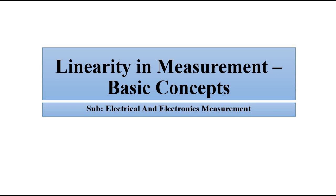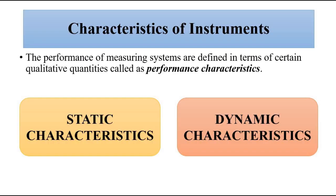Hello friends, welcome to Engineering Tutorial. We'll continue our discussion related to electrical and electronics measurement, specifically about the performance characteristics of measurement systems or instruments. We were discussing static characteristics — the parameters which remain constant with respect to time — and we have covered accuracy, precision, error, sensitivity, repeatability, and reproducibility.